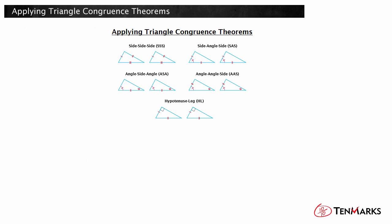When two triangles have three pairs of congruent corresponding sides, we can say the triangles are congruent by the SSS congruence theorem. If two triangles have two pairs of congruent sides and their included angles are congruent, we can use the SAS congruence theorem.